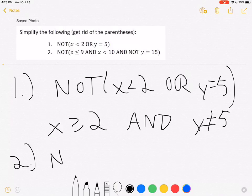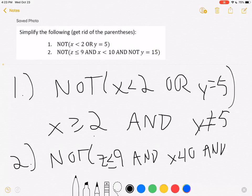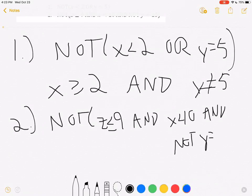Similarly, for the second one, we have not z is less than or equal to 9, and x is less than 10, and not y is equal to 15.